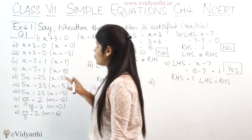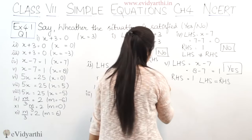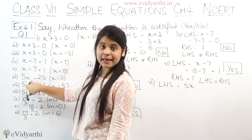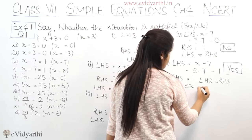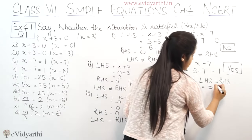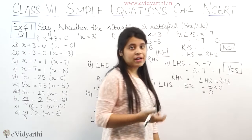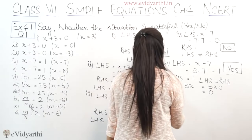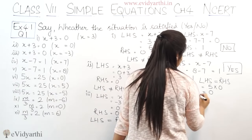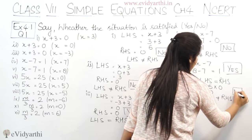In the sixth part we have 5x equals to 25, and x value is 0. Left hand side is 5x, which means 5 multiply by x. If x value is 0, then 5 into 0 is 0. RHS is 25. LHS is not equal to RHS, so the answer is no.